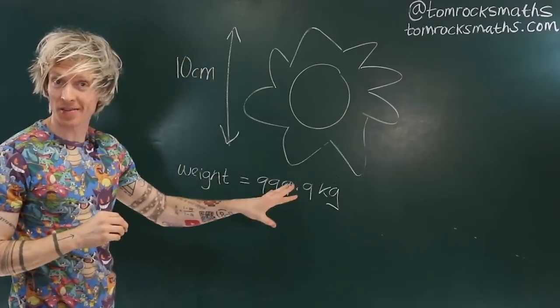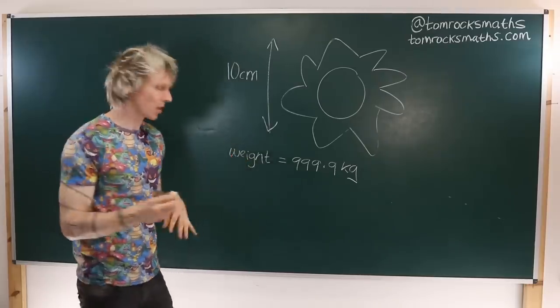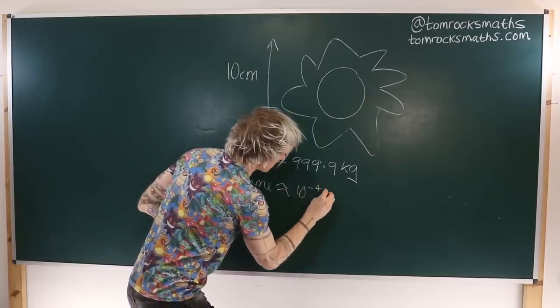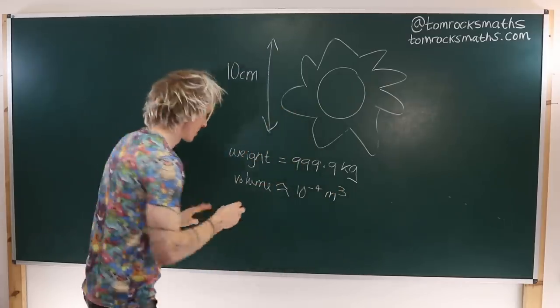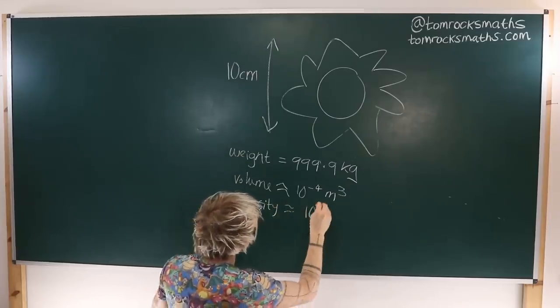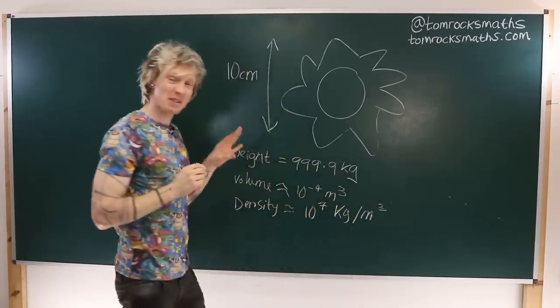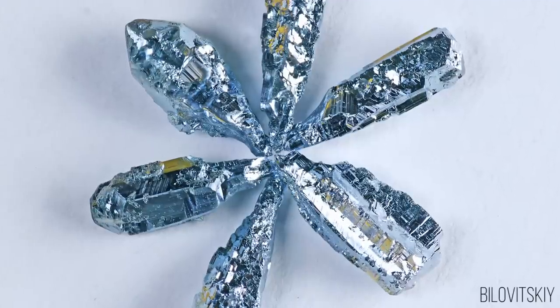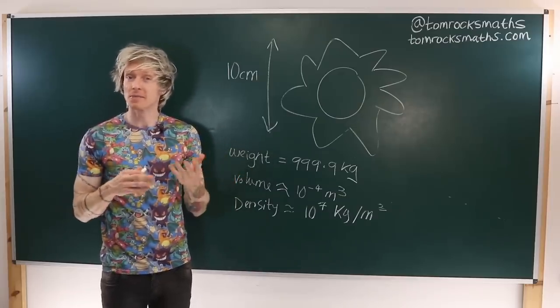Possible formatting issues going on there, one for you there Matt. Given the size and shape of the Pokemon, we can estimate its volume to be approximately 10 to the minus 4 meters cubed. Now again dividing the weight by the volume gives us a density which is equal to 10 to the 7 kilograms per meter cubed. Now to me this looks like a very big number. For comparison, Osmium, the densest material on Earth, has a density of only 22,610 kilograms per meter cubed. That's over 400 times less than our Pokemon.